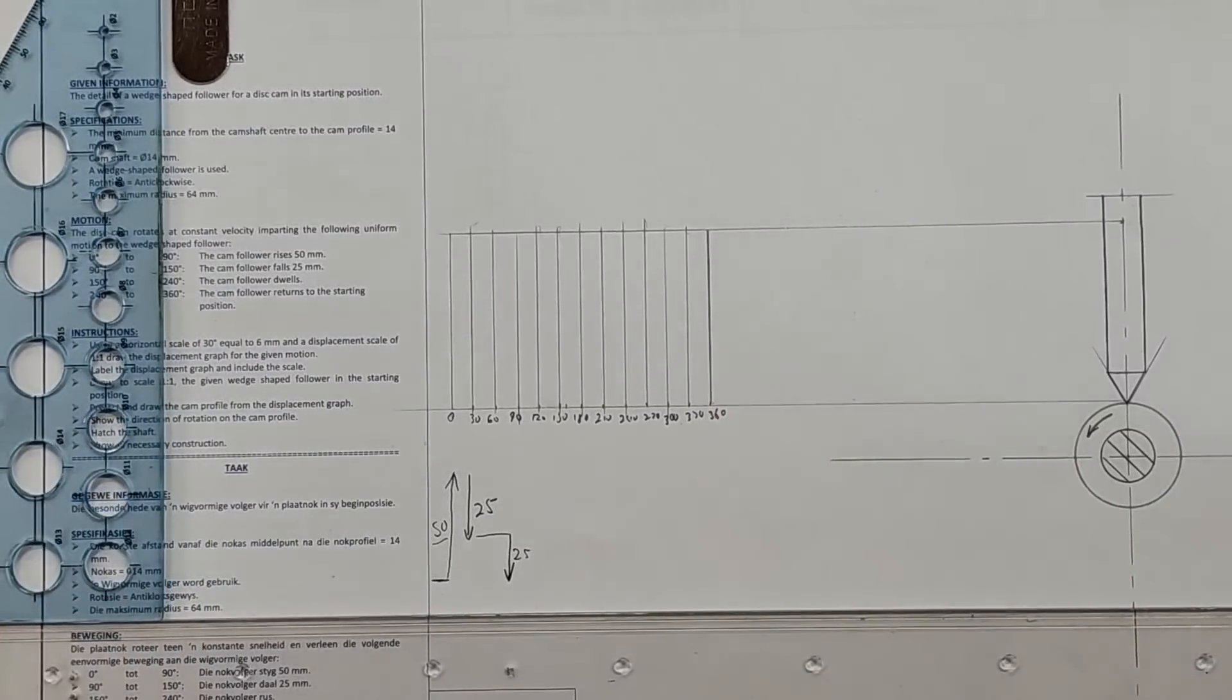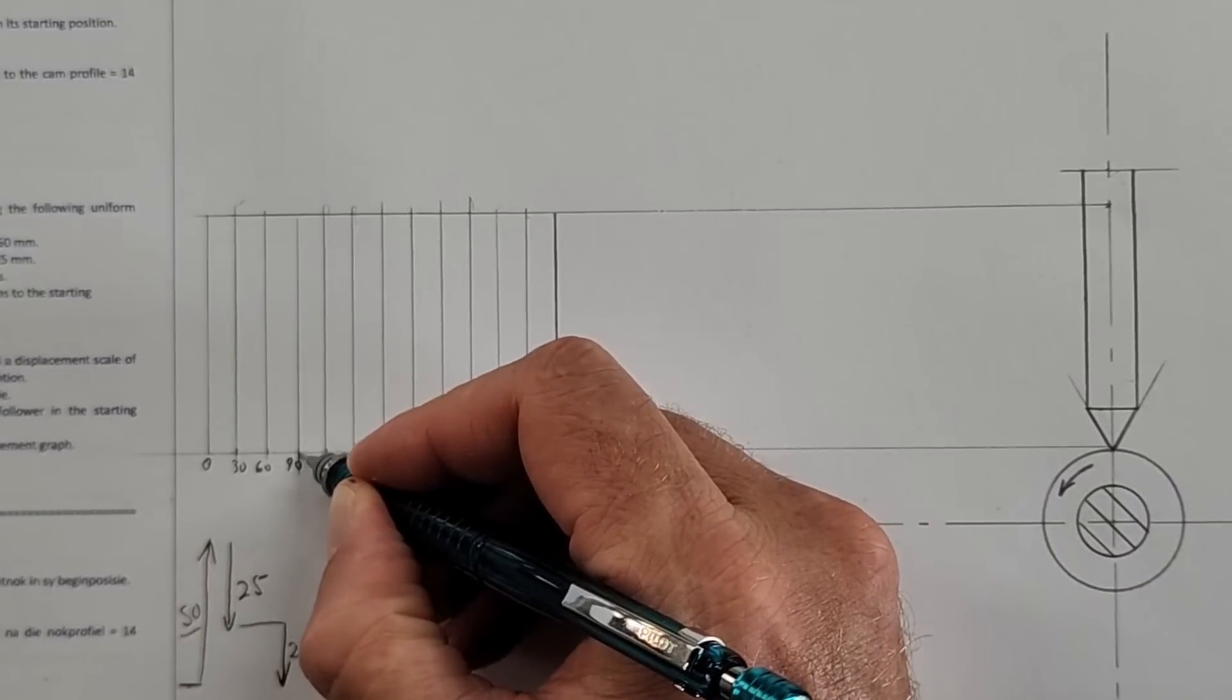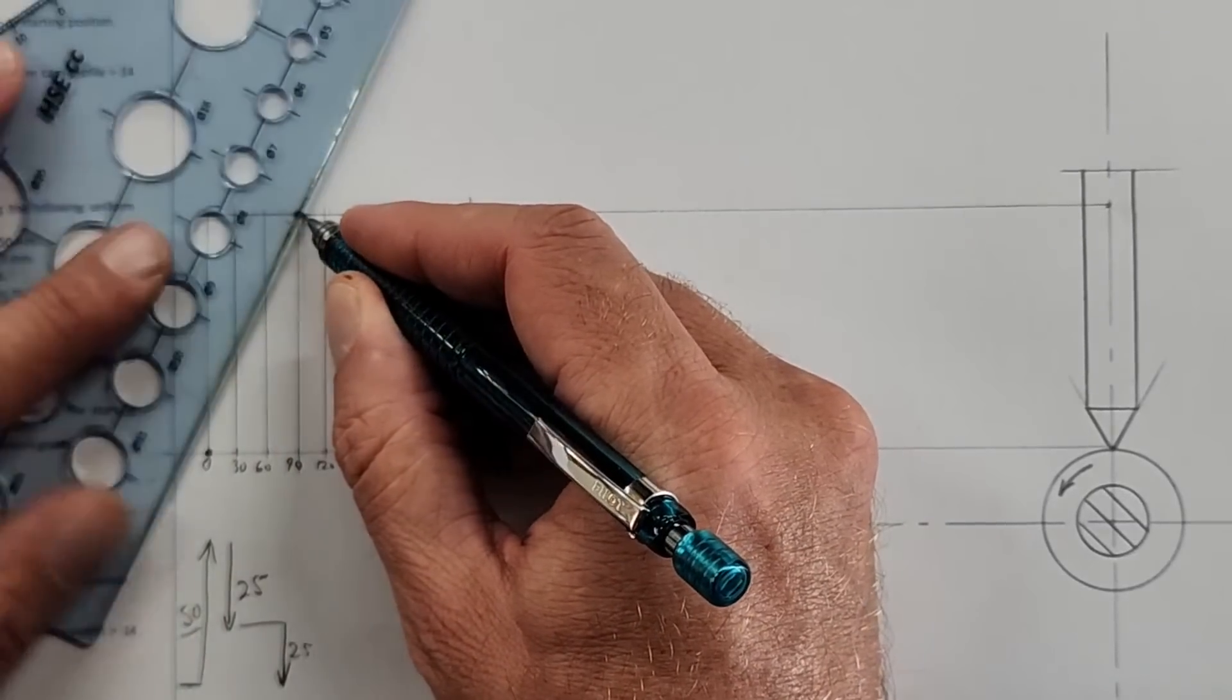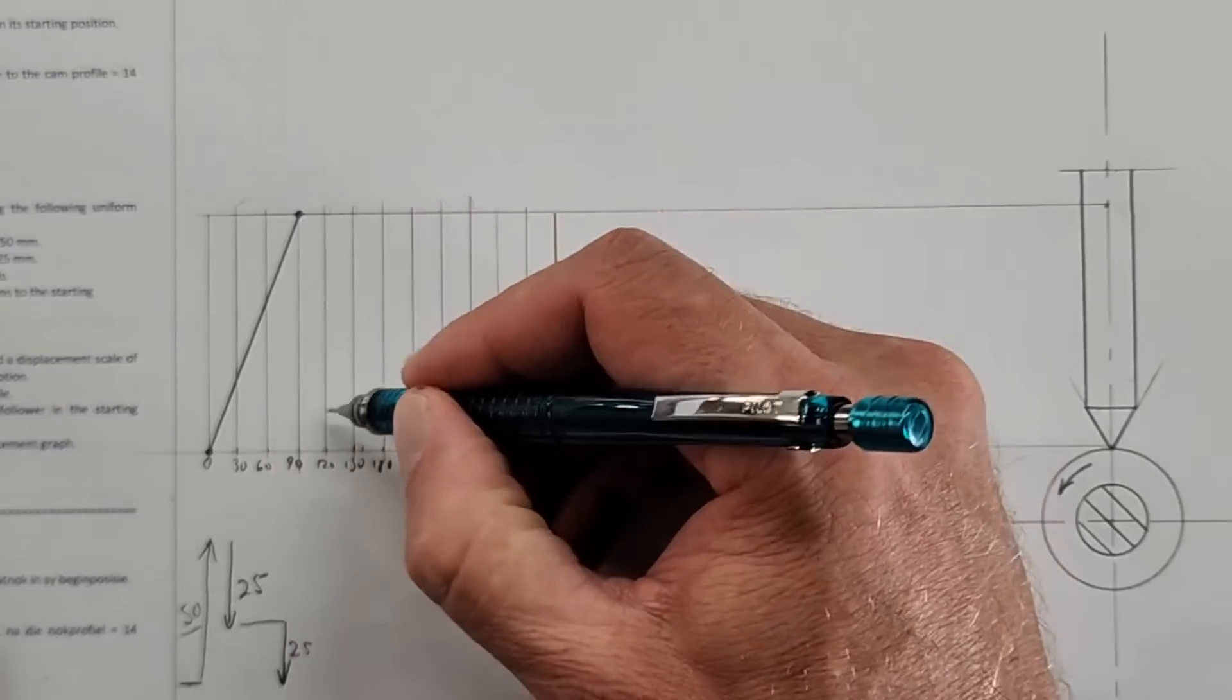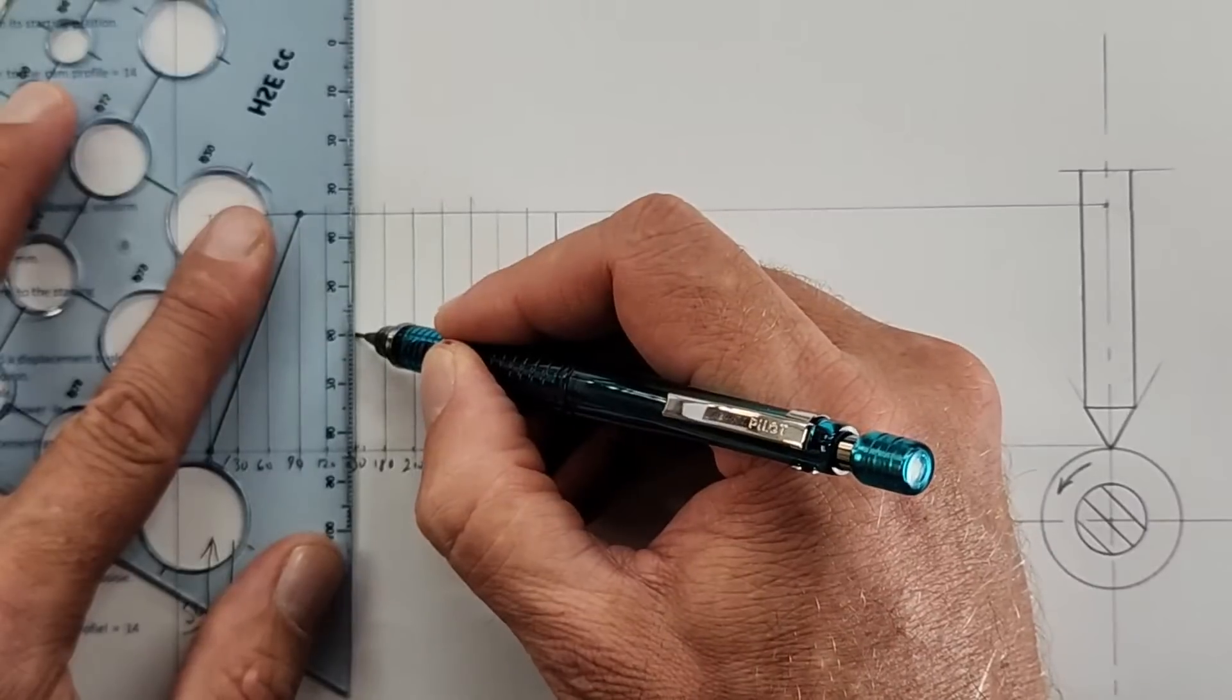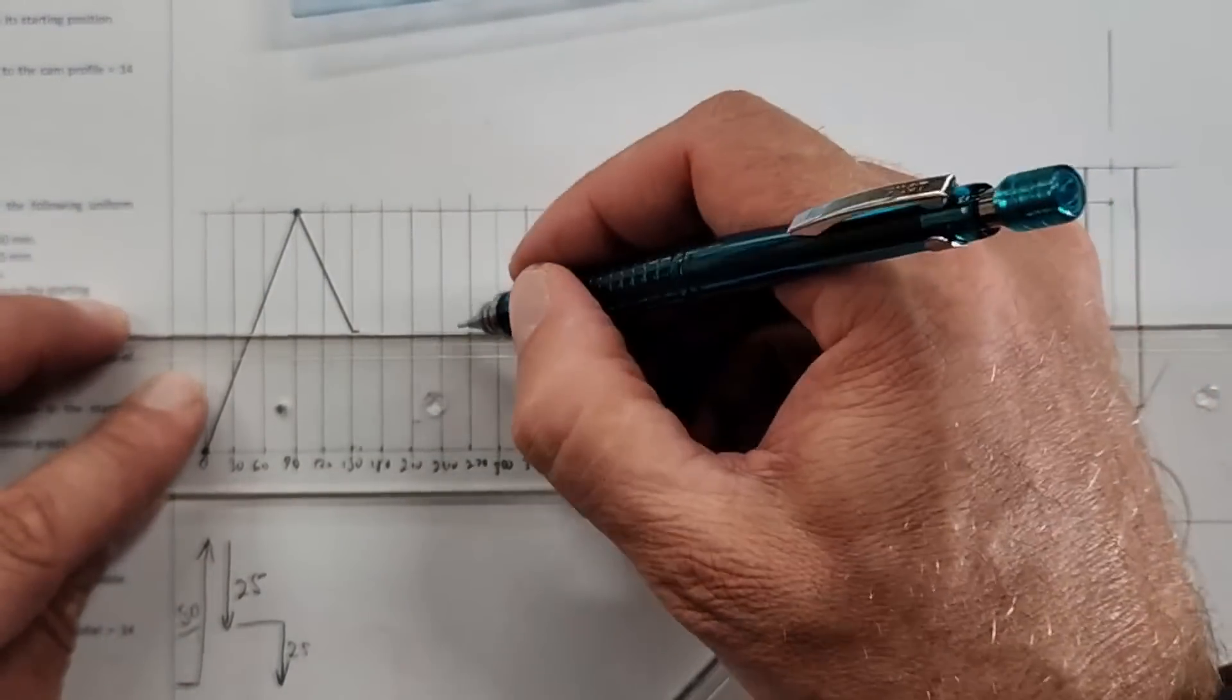From 0 to 90 it rises with 50, so that's to the maximum. First dot and last dot and I can draw that in with confidence. Then it says from 90 to 150, so it's up to here, it falls with 25 millimeters - it's halfway.